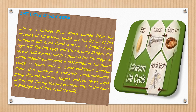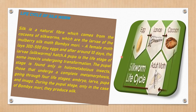A female moth lays 300 to 500 tiny eggs, and after around 10 days the larvae or Silkworms hatch. So around 300 to 500 eggs can be laid by a female moth at a time, and after about 10 days the larvae form.